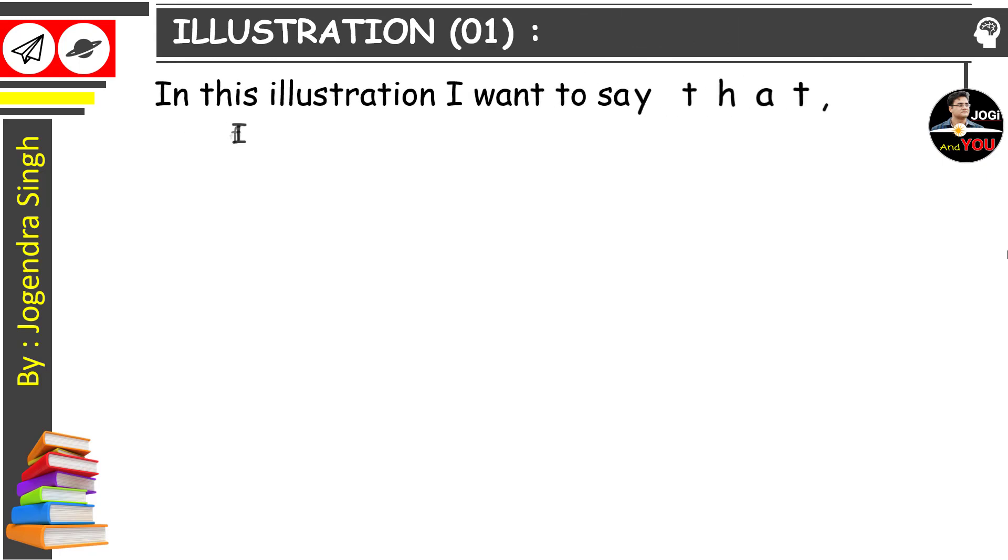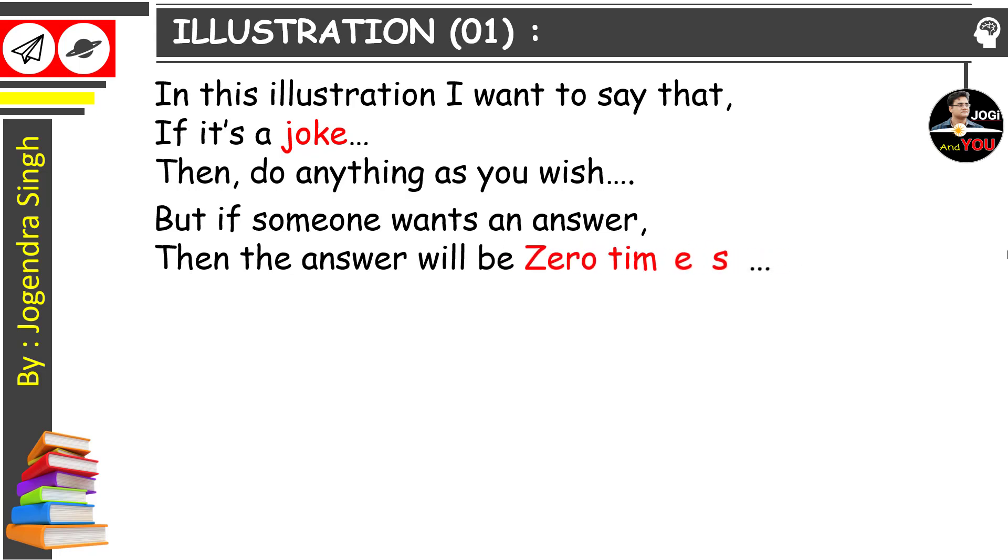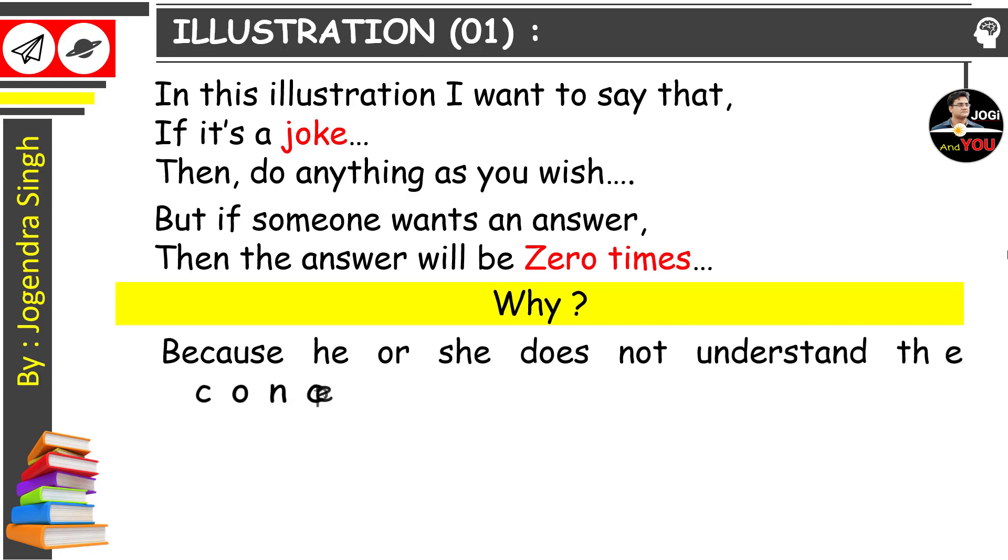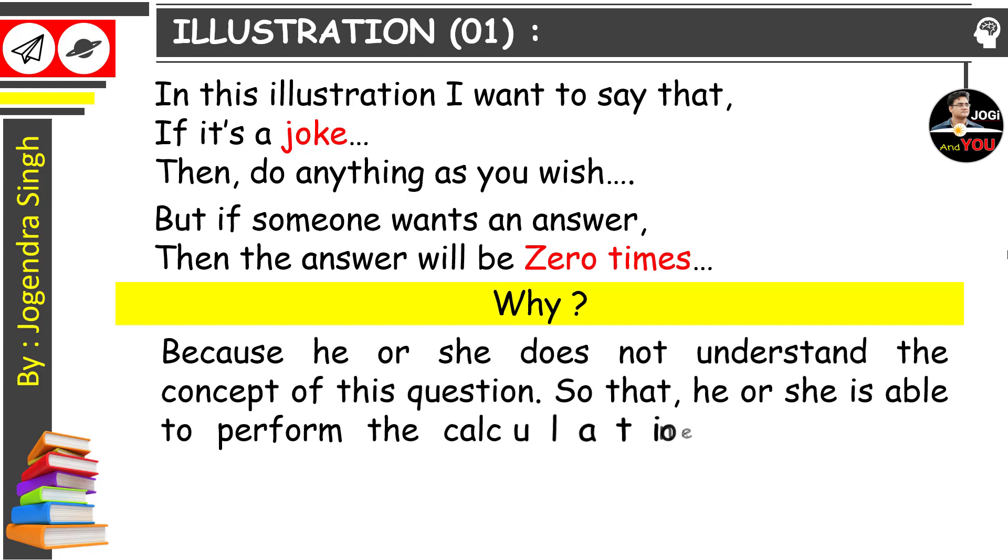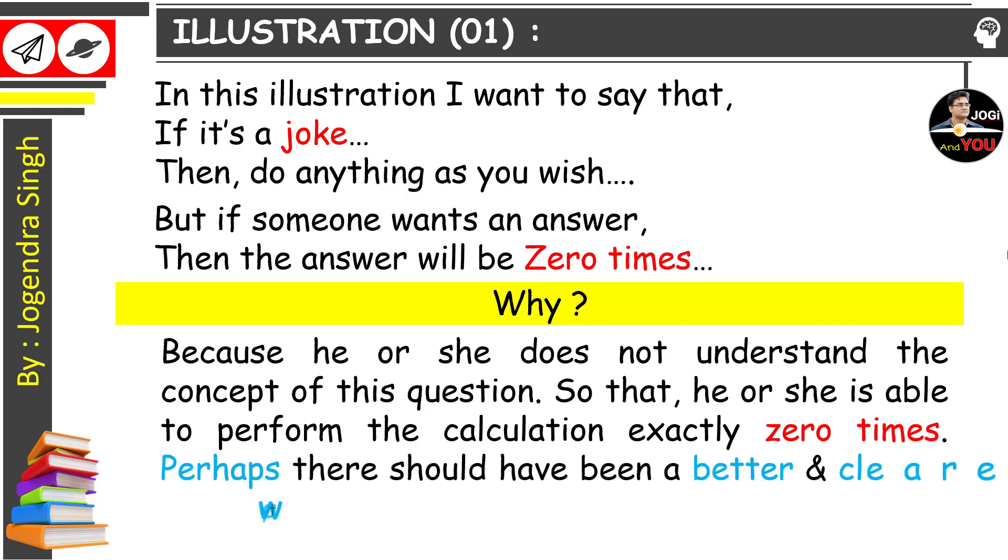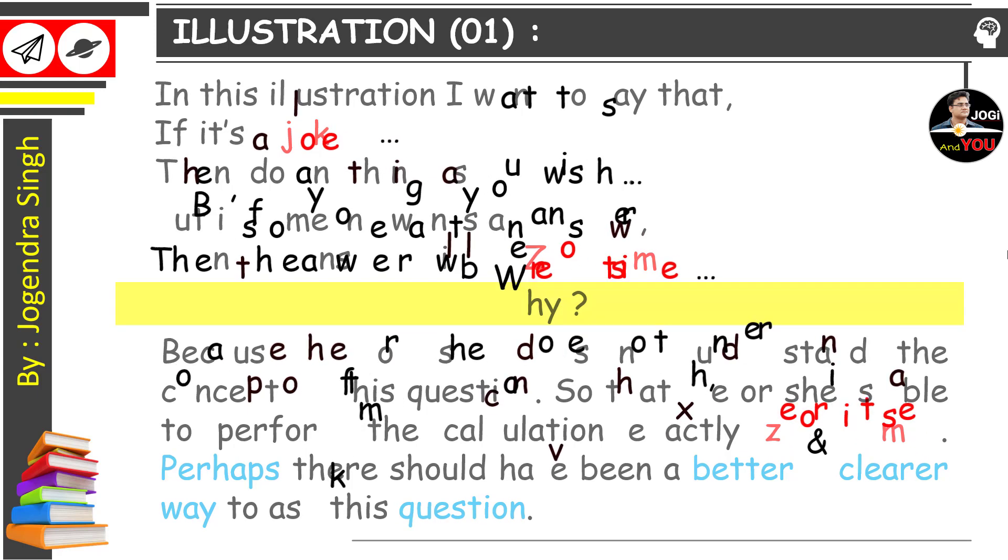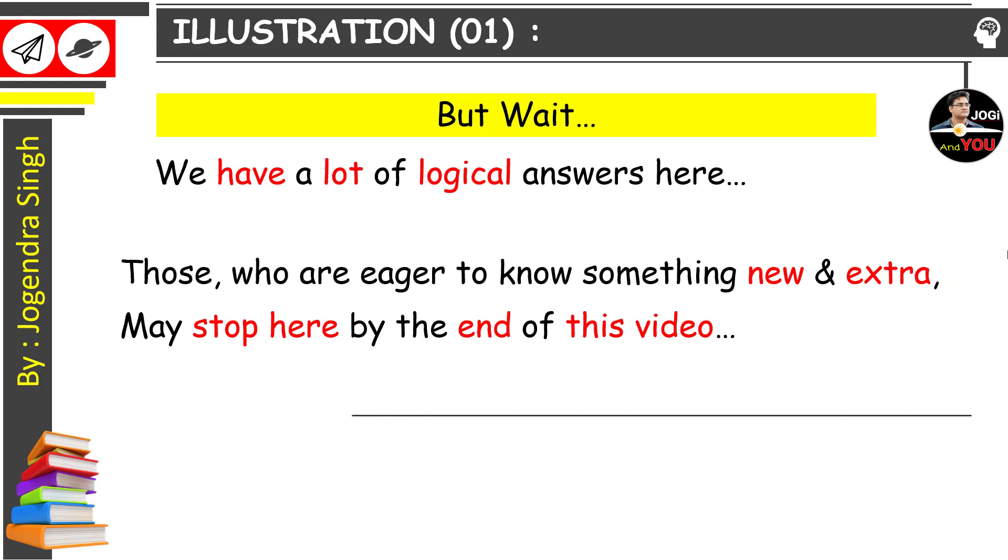In this illustration, I want to say that if it is a joke, then do anything as you wish. But if someone wants an answer, then the answer will be 0 times. Why? Because she or he does not understand the concept of this question, so they are able to perform the calculation exactly 0 times. Perhaps there should have been a better and clearer way to ask this question. But wait, we have a lot of logical answers here. Those who are eager to know something new and extra may stop here by the end of this video.